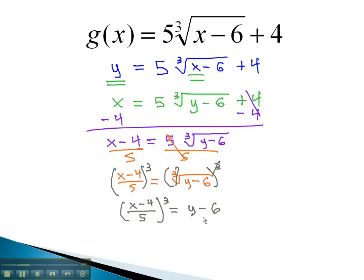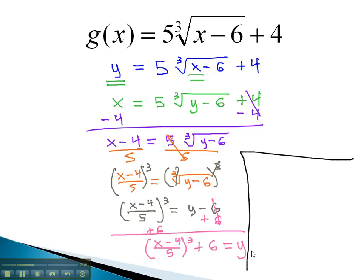Finally, we can get the y alone by adding 6 to both sides. Now, we end up with the quantity x minus 4 over 5 cubed, plus 6 is equal to y. This, then, is our inverse function. We could say g inverse of x is equal to x minus 4 over 5 cubed plus 6.